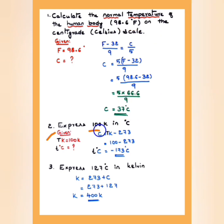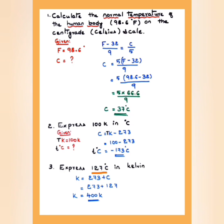Next, express 100 K in degree Celsius. Using C = K − 273, substitute K = 100: C = 100 − 273 = −173°C. These are very easy sums — just remember the formula. Next, express 127°C in Kelvin. Using K = 273 + C: K = 273 + 127 = 400 K.